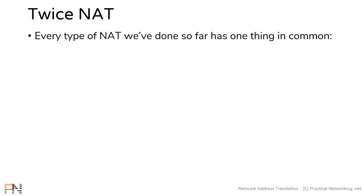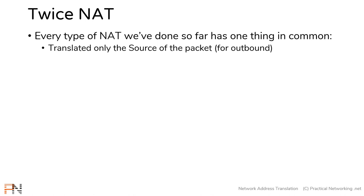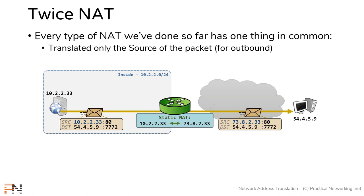Every type of NAT we've done so far has one thing in common: we have translated only the source of the packet in the outbound direction. This was our static NAT example. Notice this was the packet before translation, and this was the packet after translation. In the outbound direction, the only thing that changed is the source of the packet.